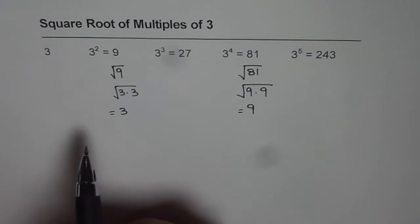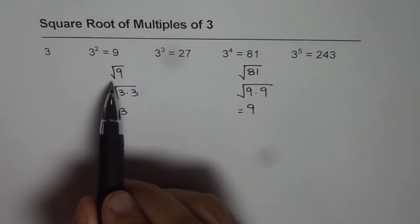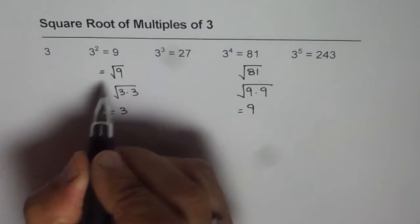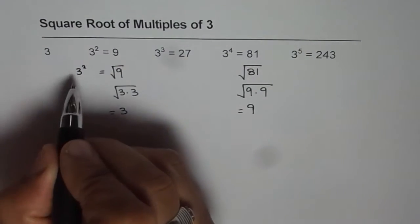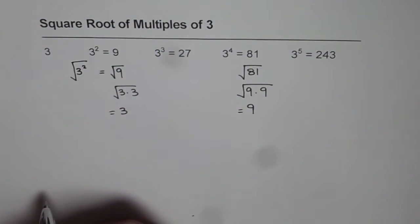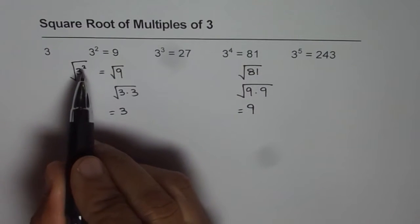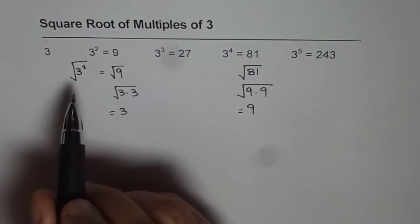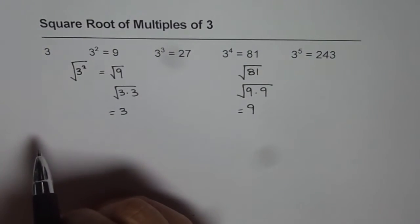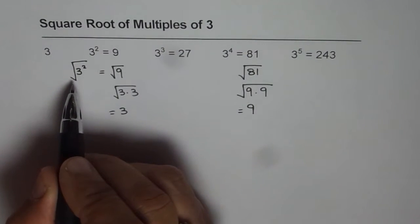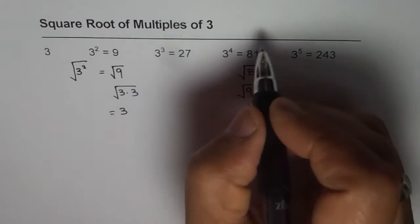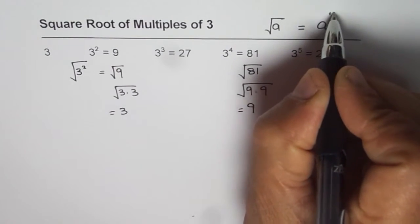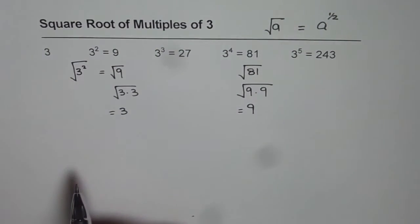You will notice that using the exponent form, we know that square root of 9 is 3 squared. So we could write this as the square root of 3 squared. Now when we take the square root of 3 squared, we need to get the answer 3. Square root is basically the same as raising to the power of half — that is, square root of a equals a to the power of half.